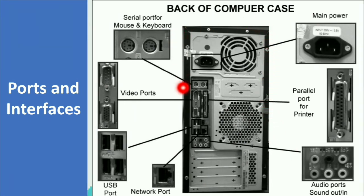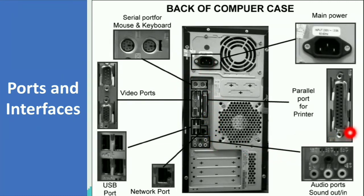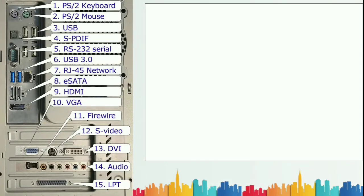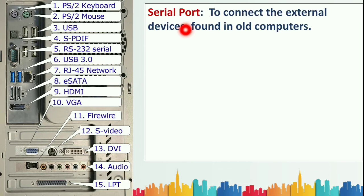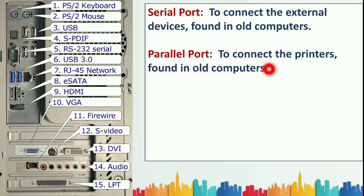Now let's discuss ports and interfaces. The back of the CPU has all the ports used to connect peripheral devices. There is a main power supply port, a parallel port found in old computers, and a serial port also found in old computers. The serial port is used to connect external devices. The parallel port is used to connect printers in old computers.